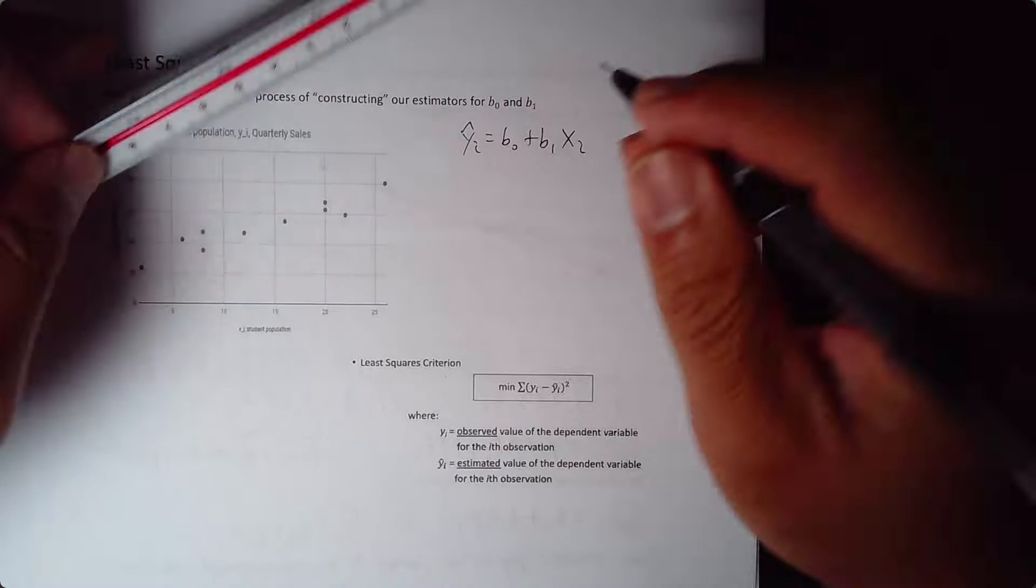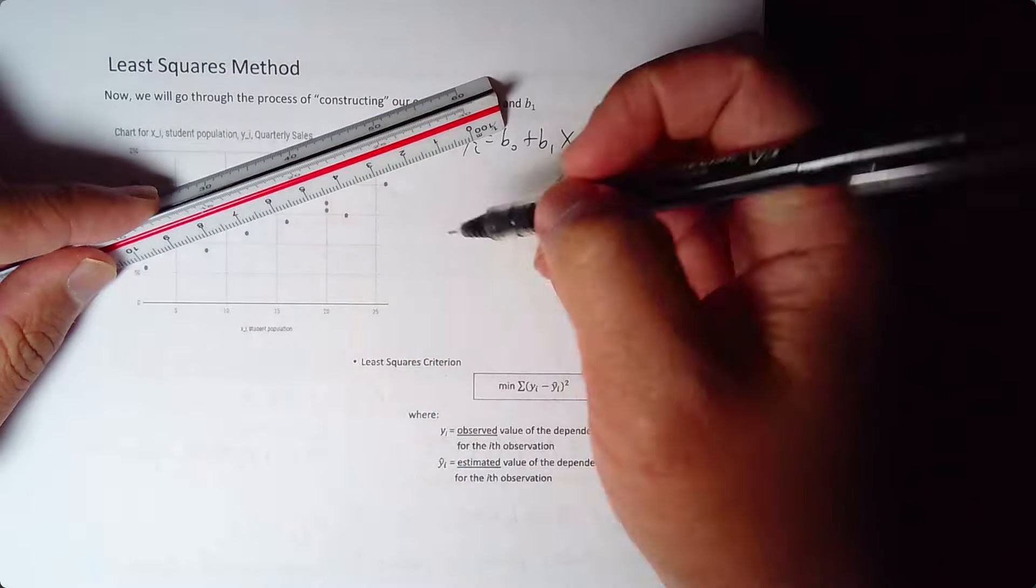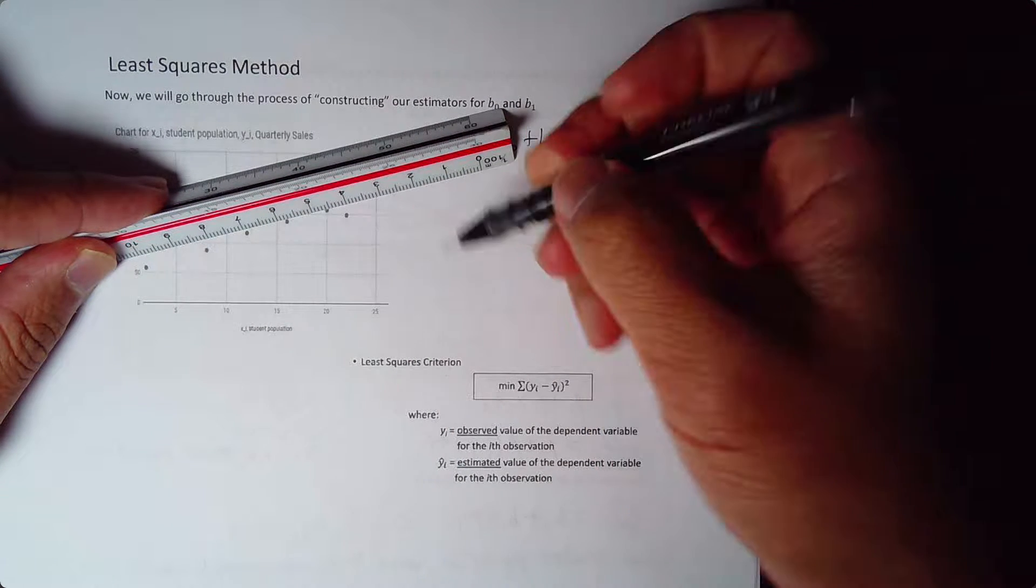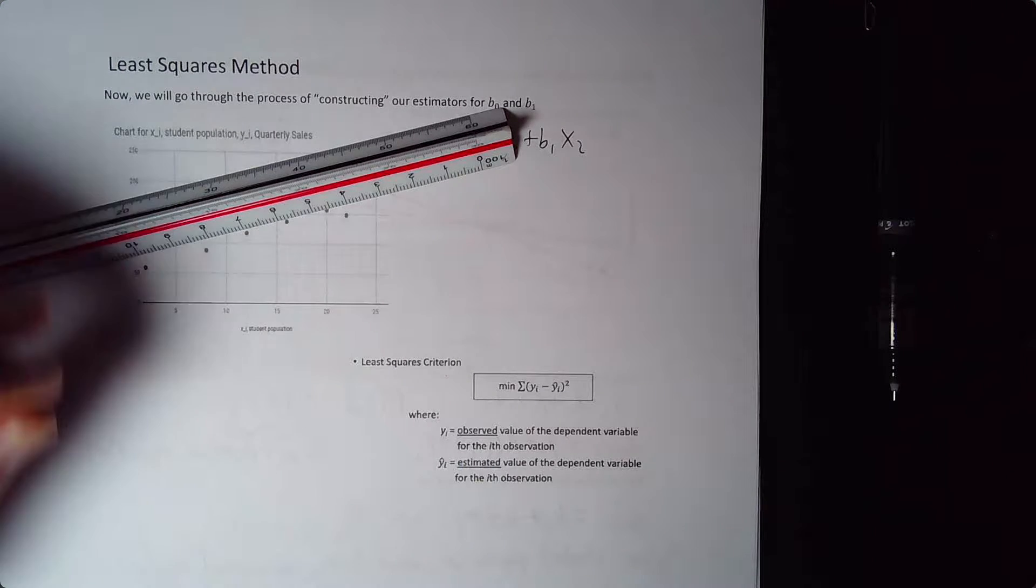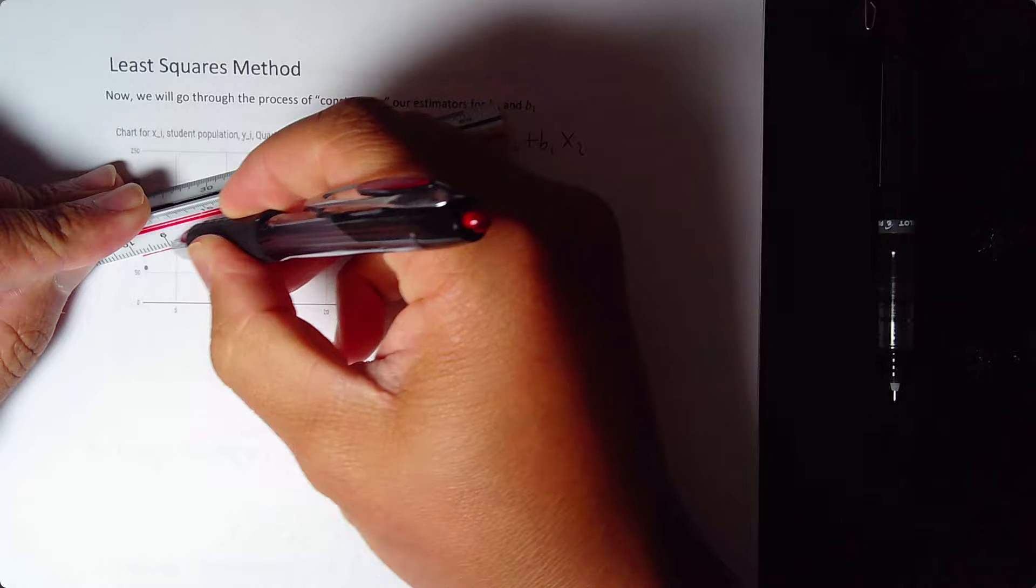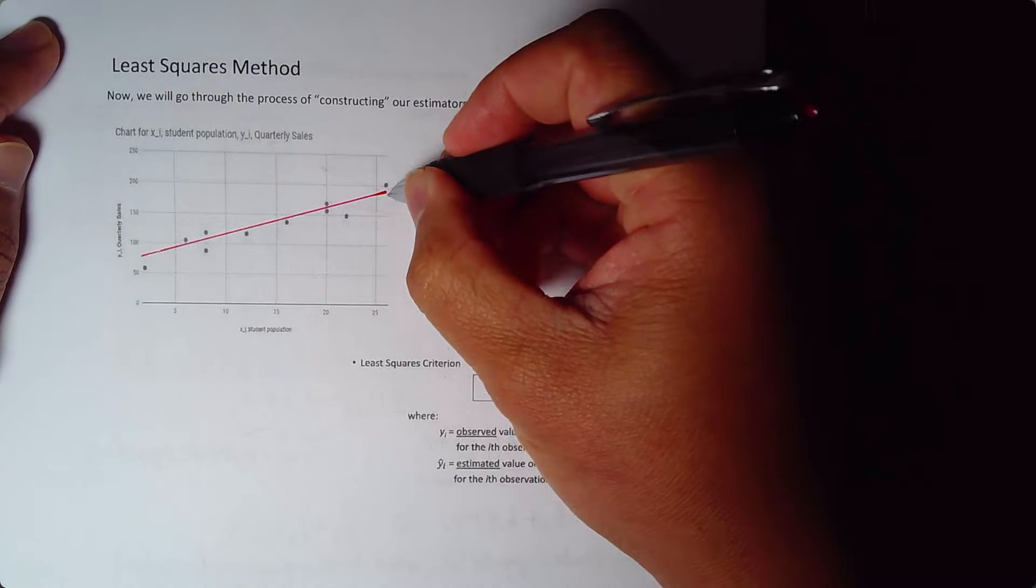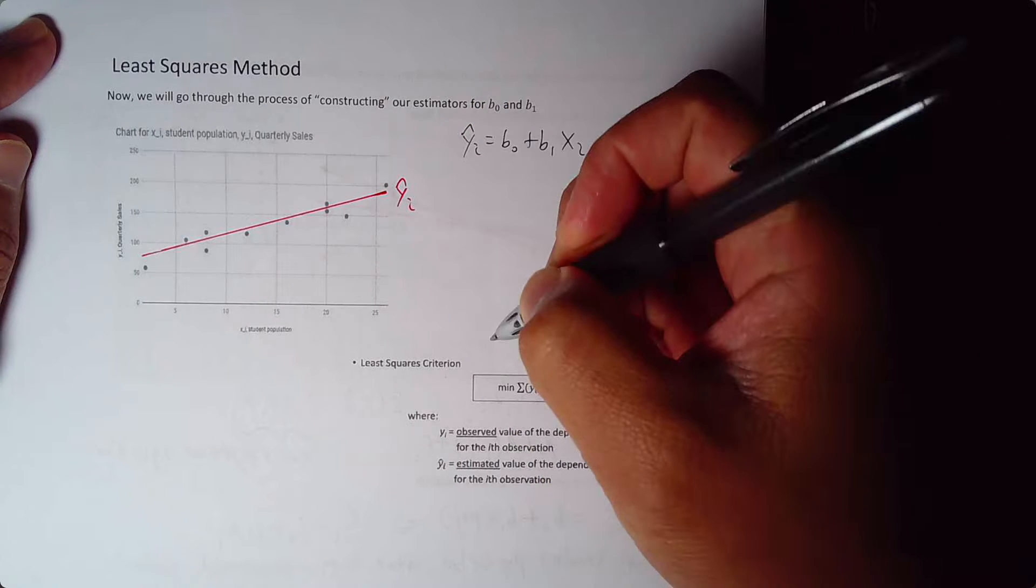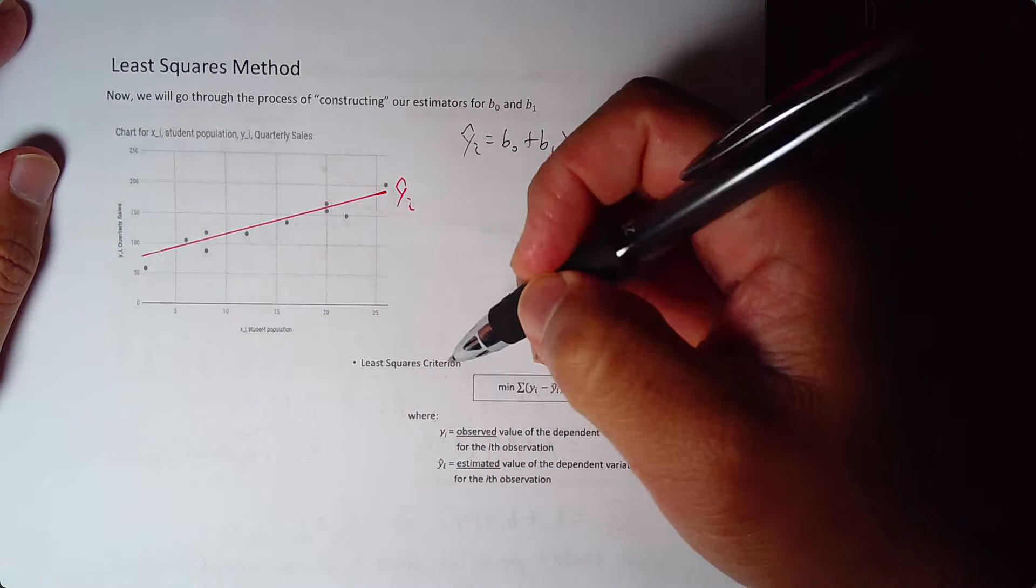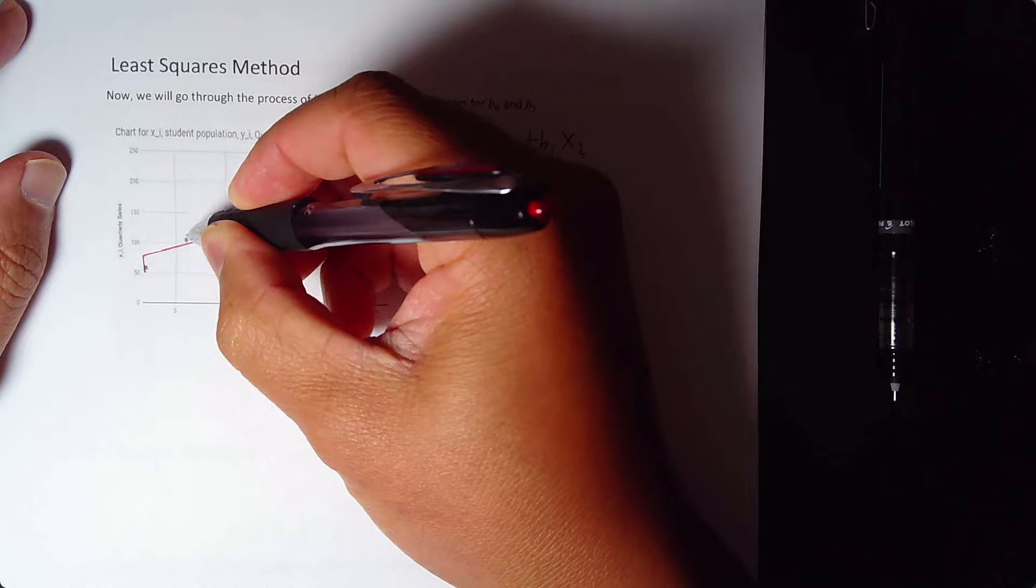Now, we know that the line exists and we want the line. So then one of the questions could be then what is the criteria that we should have in constructing this line? So let's say I draw this line arbitrarily. I still don't know what the line is yet, but I want a line. Here's my line, and this is my y hat, y hat i.